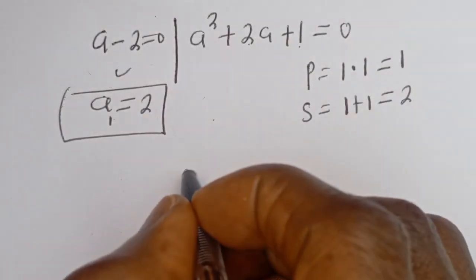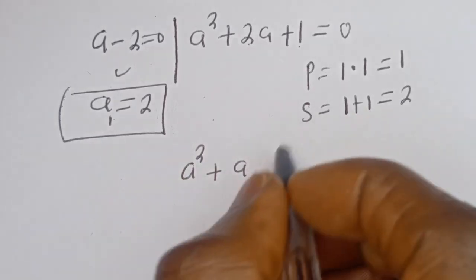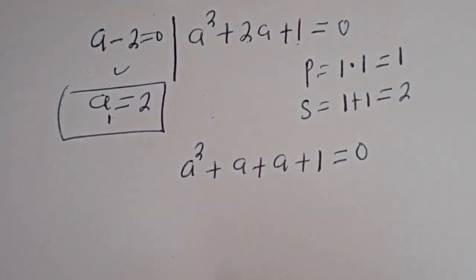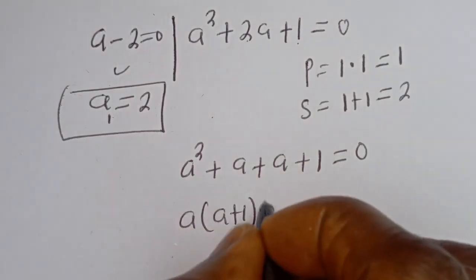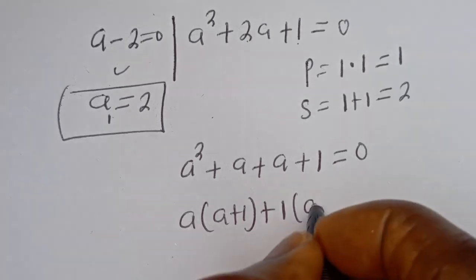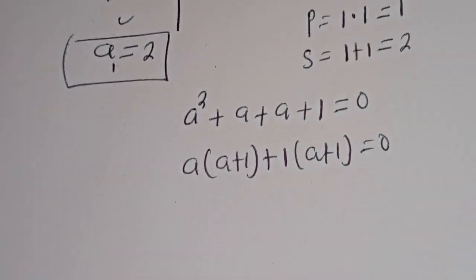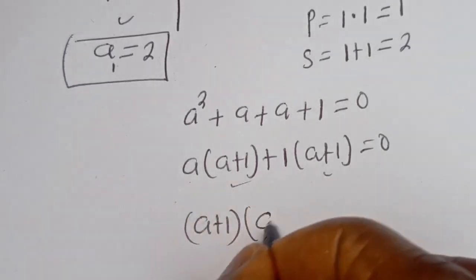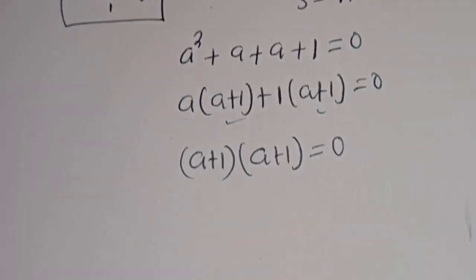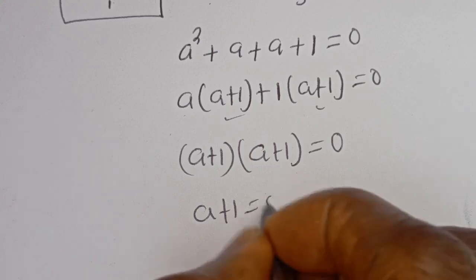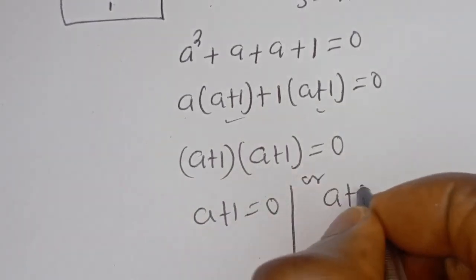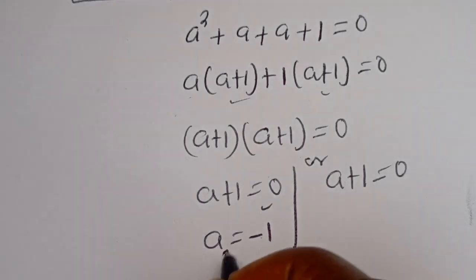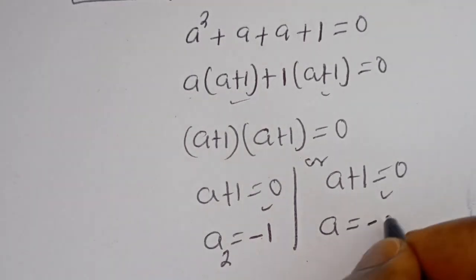Our equation becomes A squared plus A plus A plus 1 is equal to 0. Here we have A times (A plus 1) plus 1 times (A plus 1) is equal to 0. So we have (A plus 1)(A plus 1) is equal to 0. There are two cases: A plus 1 equals 0, giving A equal to minus 1, which we call A2; and again A plus 1 equals 0, giving A equal to minus 1, which is A3.